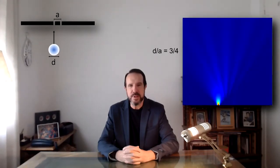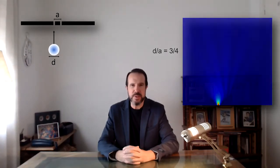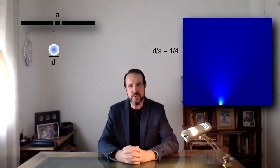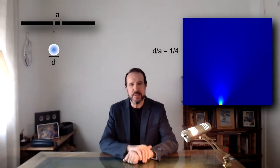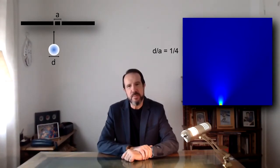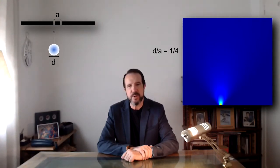However, the interference is hardly discernible when the wave's width is three quarters of the separation between the slits, and practically absent when it is reduced to one quarter. This result demonstrates that even if the beam is purely coherent, the interference pattern might disappear if the width of the incoming wave is much smaller than the distance between the slits.